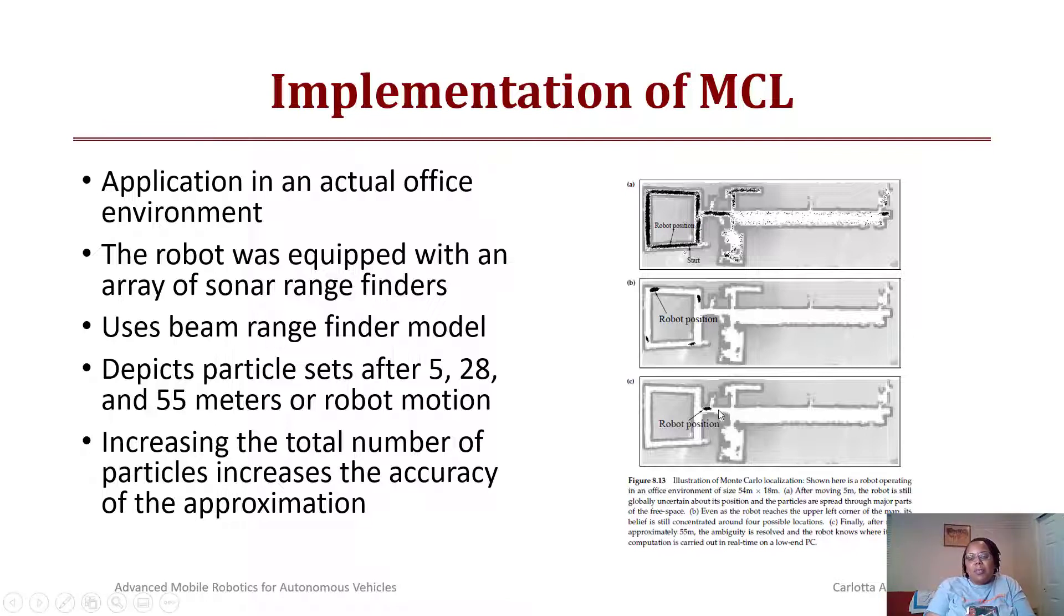If I increase the total number of particles, I can increase the accuracy of my approximation. The robot's final position is that it exits this little corridor that looks like a square and it does localize in that corner. The robot is operating in this environment, 54 meters by 18 meters. After it moves, it's globally uncertain but starts to converge in the corner of the map because it knows it's in one of the four possible corners. Finally, after it moves from the corner into the hallway, it's able to completely localize.